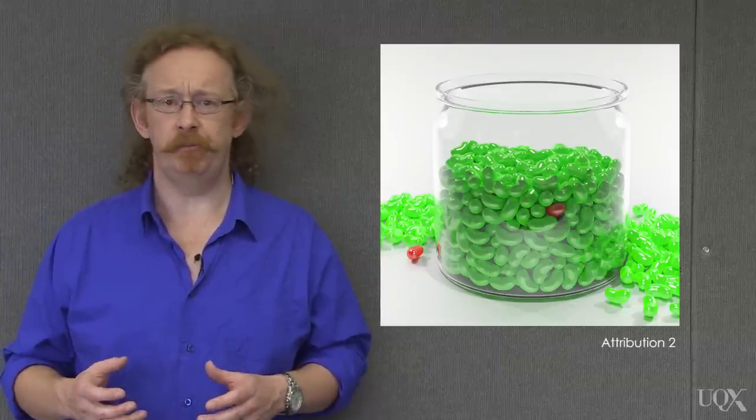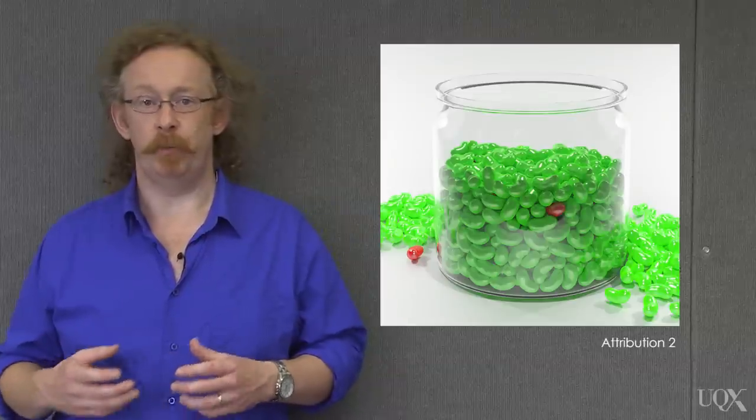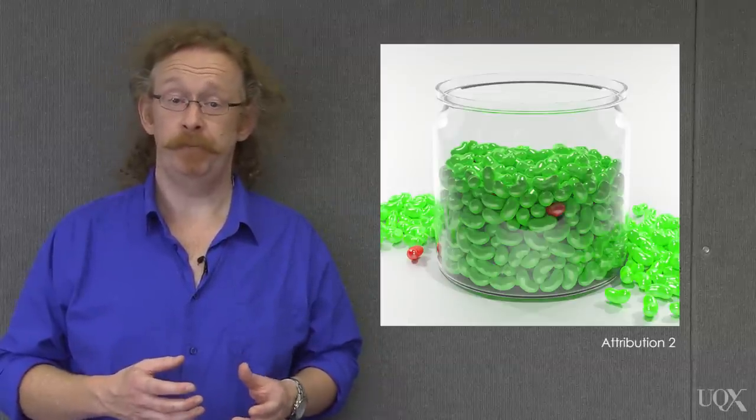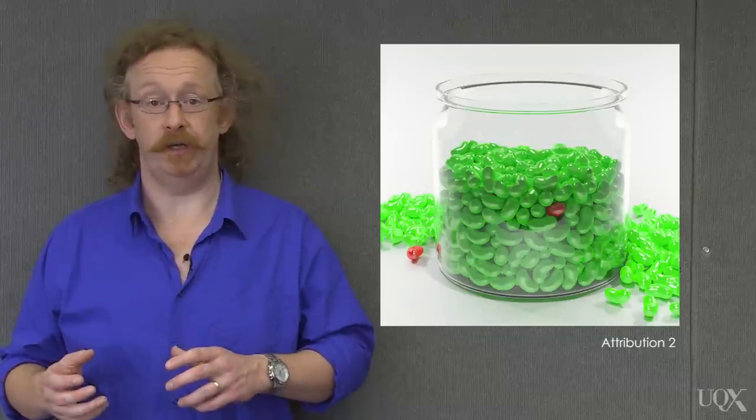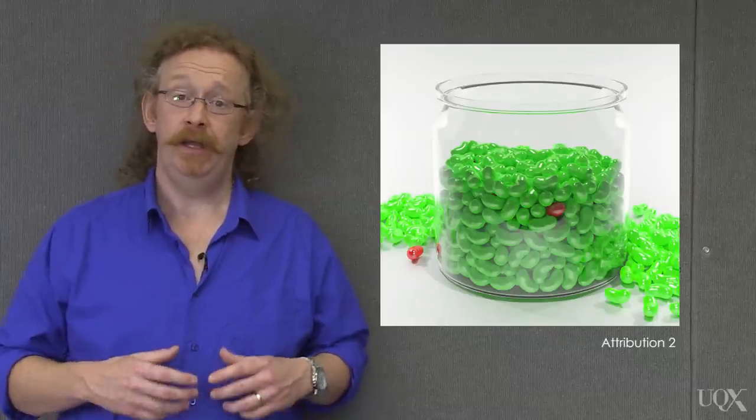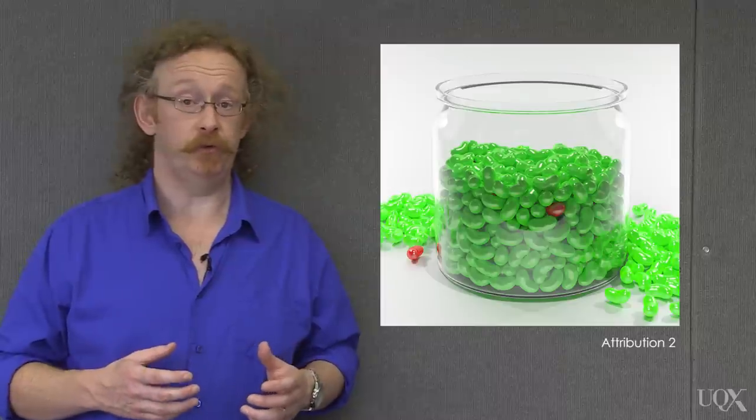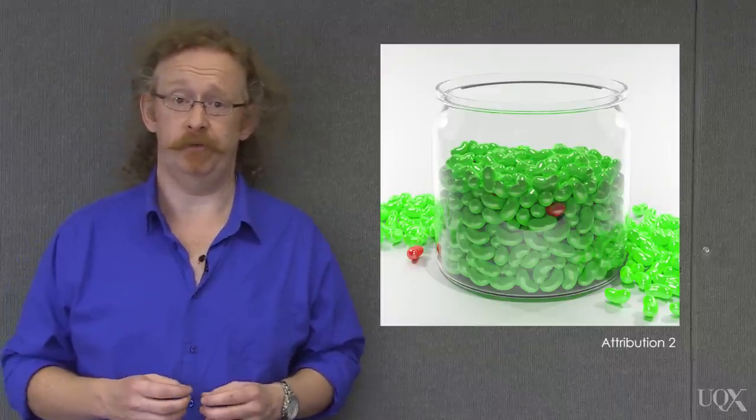This analogy provides a simple model of the carbon cycle. Each red jelly bean represents the release of 1 billion tonnes of carbon from human sources into the atmosphere. Each green jelly bean represents a transfer of 1 billion tonnes between the atmosphere and the natural environment. And each month represents a year. Even though the rise in atmospheric CO2 is caused by humans, a single molecule of CO2 has a residence time of only about 4 years in the atmosphere.